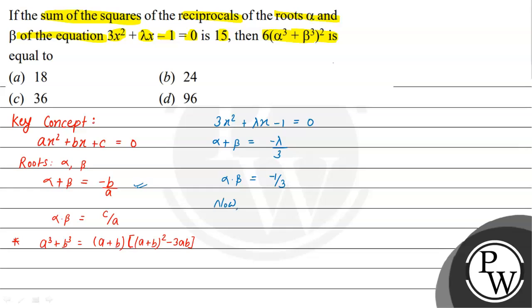The question gives that the sum of the squares of the reciprocals of the roots is 15. So we write: 1/α² + 1/β² = 15, which equals (α² + β²) / (αβ)² = 15.